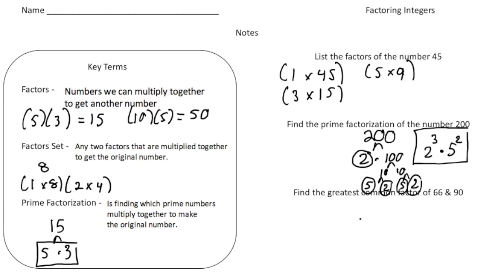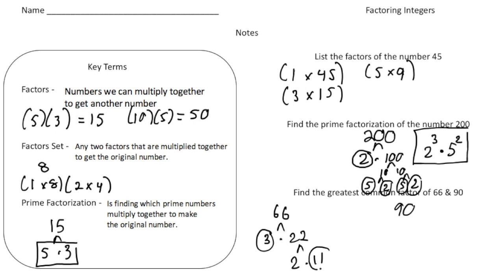Now we're going to find the greatest common factor of 66 and 90. The way you do this is to first find the prime factorization of both numbers. So for 66: 3 goes into 66, giving 3 times 22. 3 is prime, and 22 is not, so I break 22 down to 2 and 11. There's nothing else to break apart, so the prime factorization of 66 is 3 times 2 times 11.